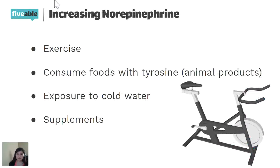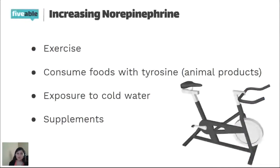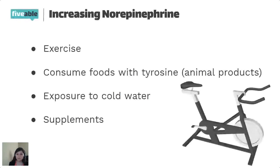To increase norepinephrine, you should exercise and consume foods with tyrosine, such as animal products like fish, poultry, and dairy. Exposure to cold water also helps and is more of a short-term fix — just splash some cold water on your face or take a cold bath. You can also use supplements.